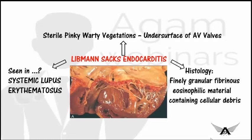Libman-Sacks endocarditis is found in systemic lupus erythematosus, an autoimmune disorder. The lesion is a vegetation that appears pink, sterile, and verrucous. The lesion may be single or multiple and is small in size. On microscopic examination, the lesion appears as finely granular fibrinous eosinophilic material containing cellular debris including nuclear remnants.